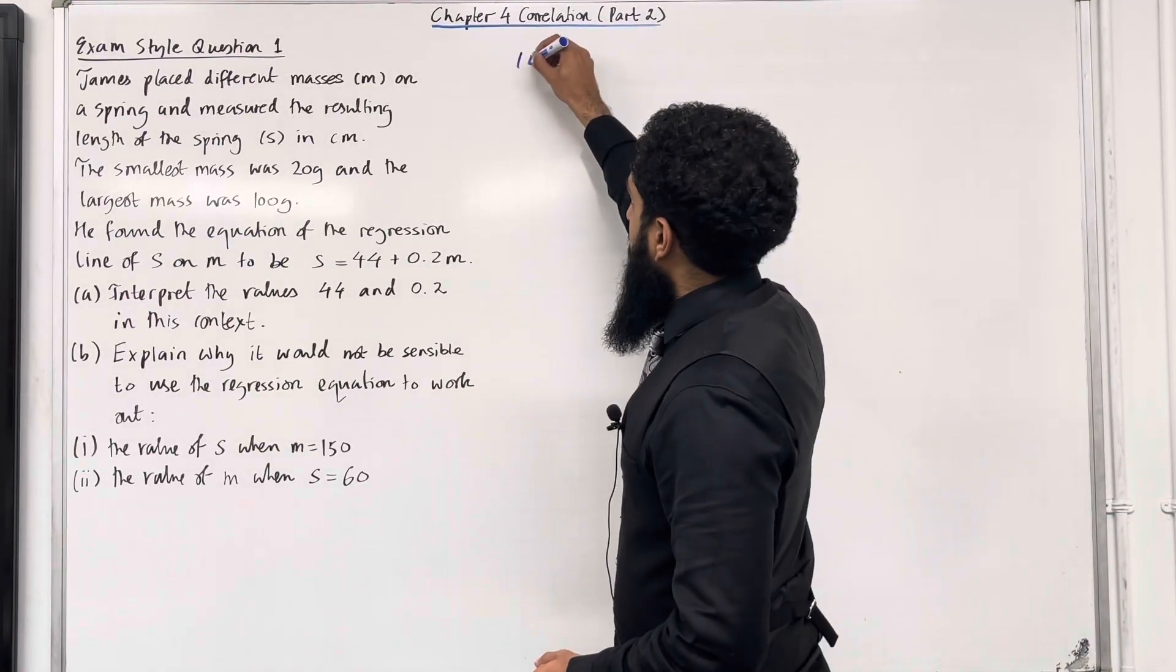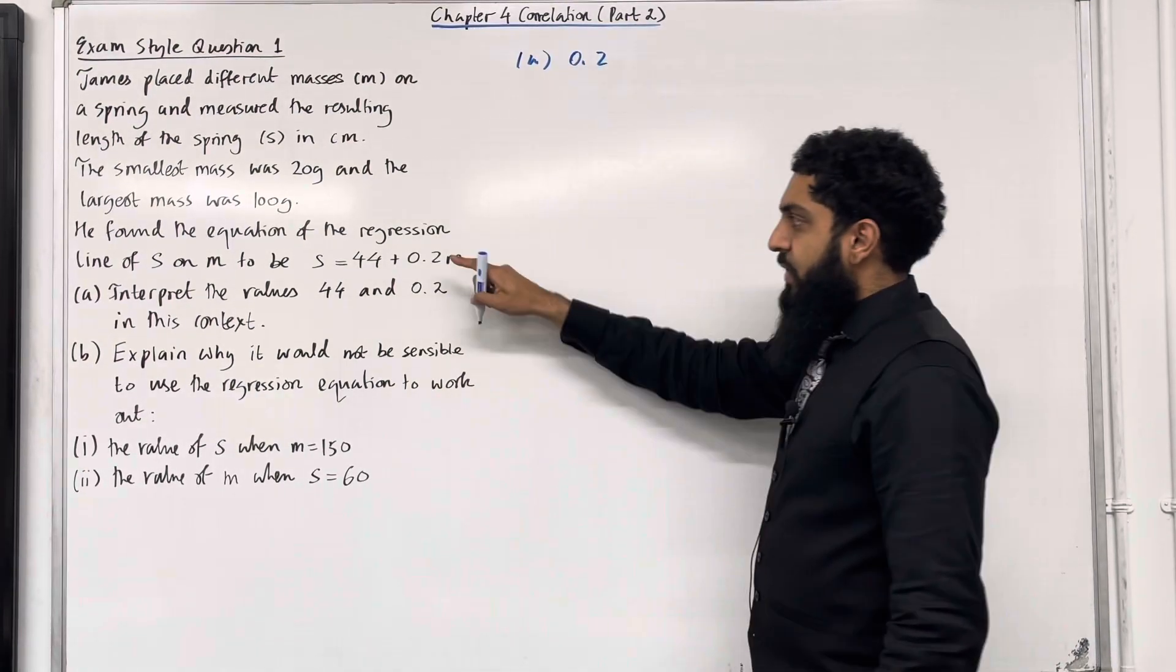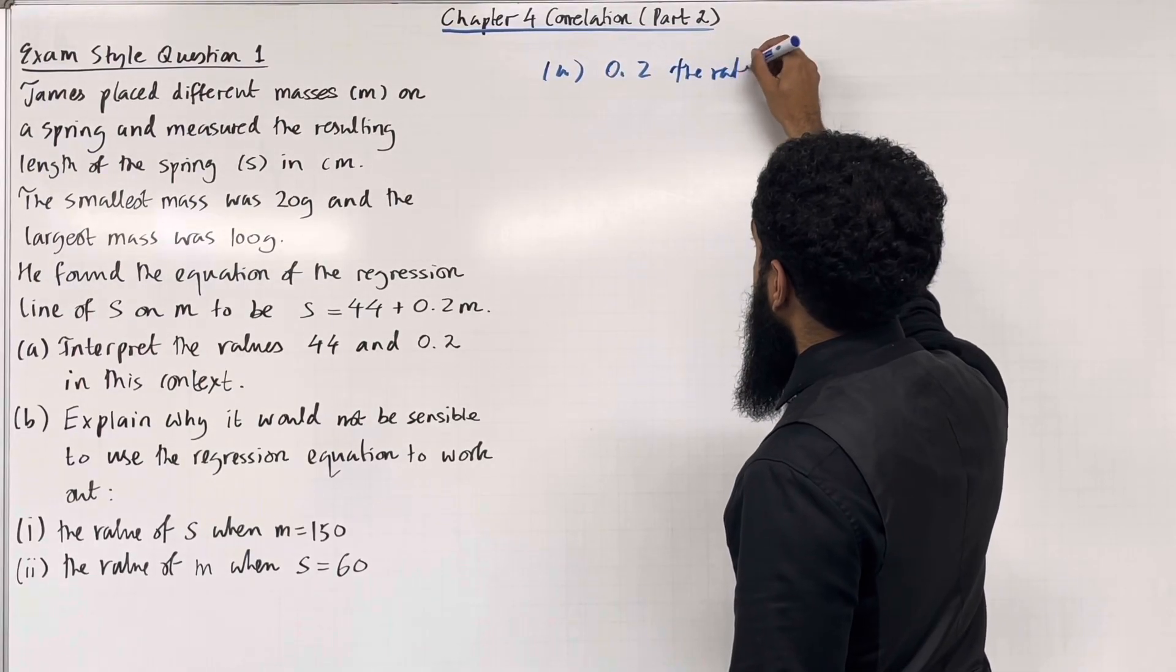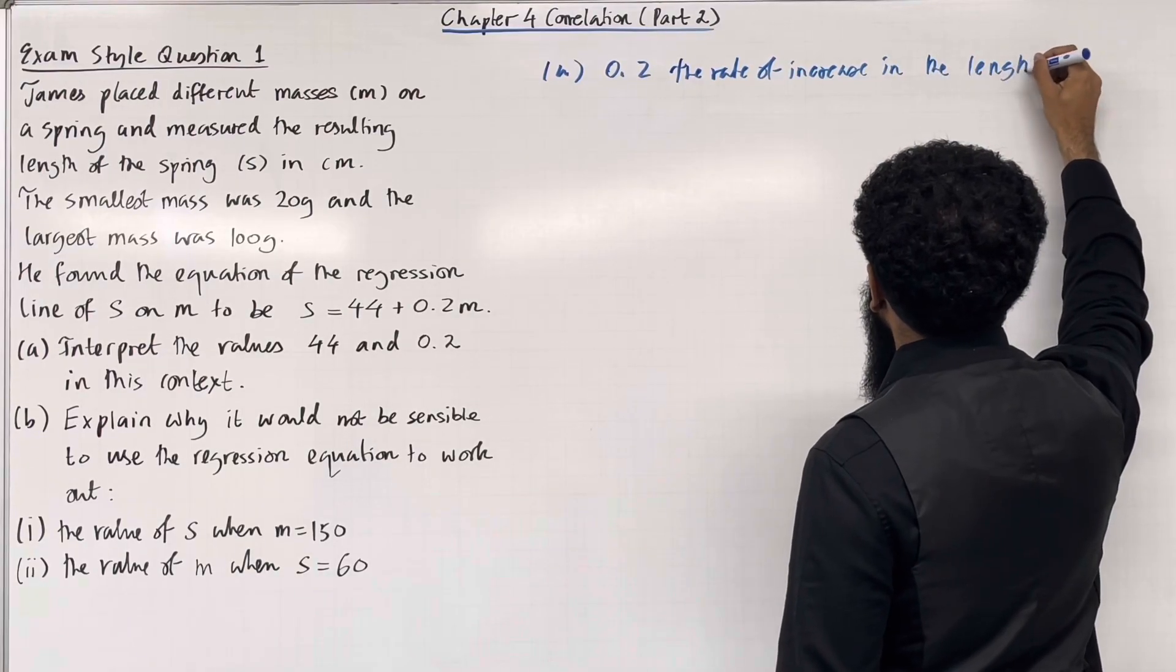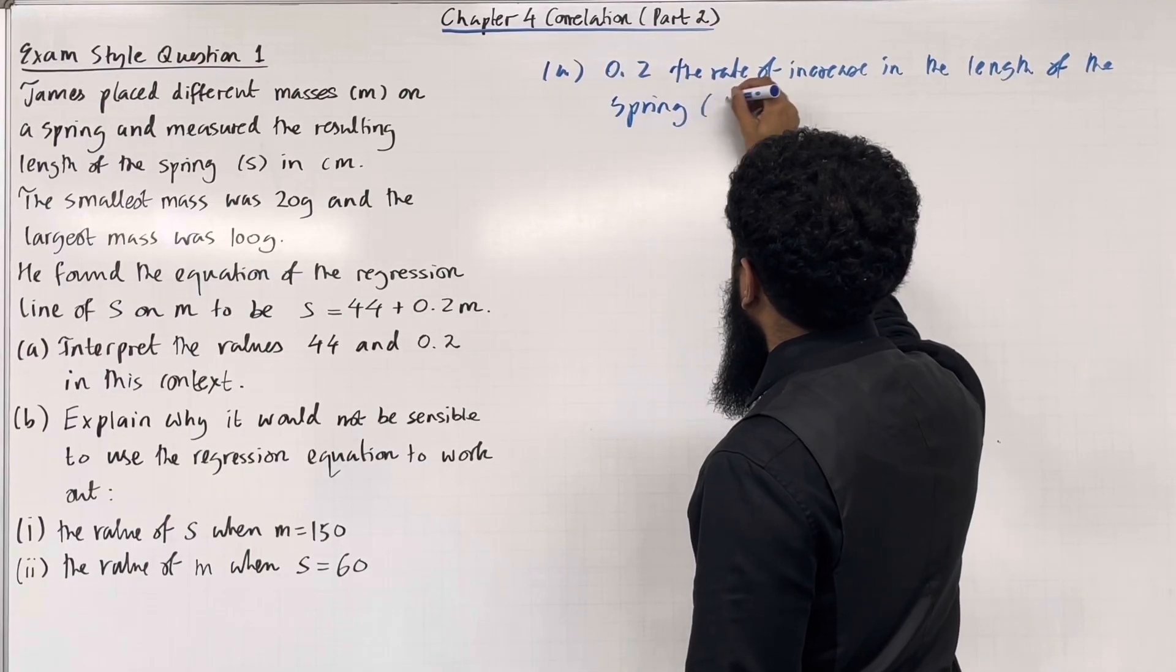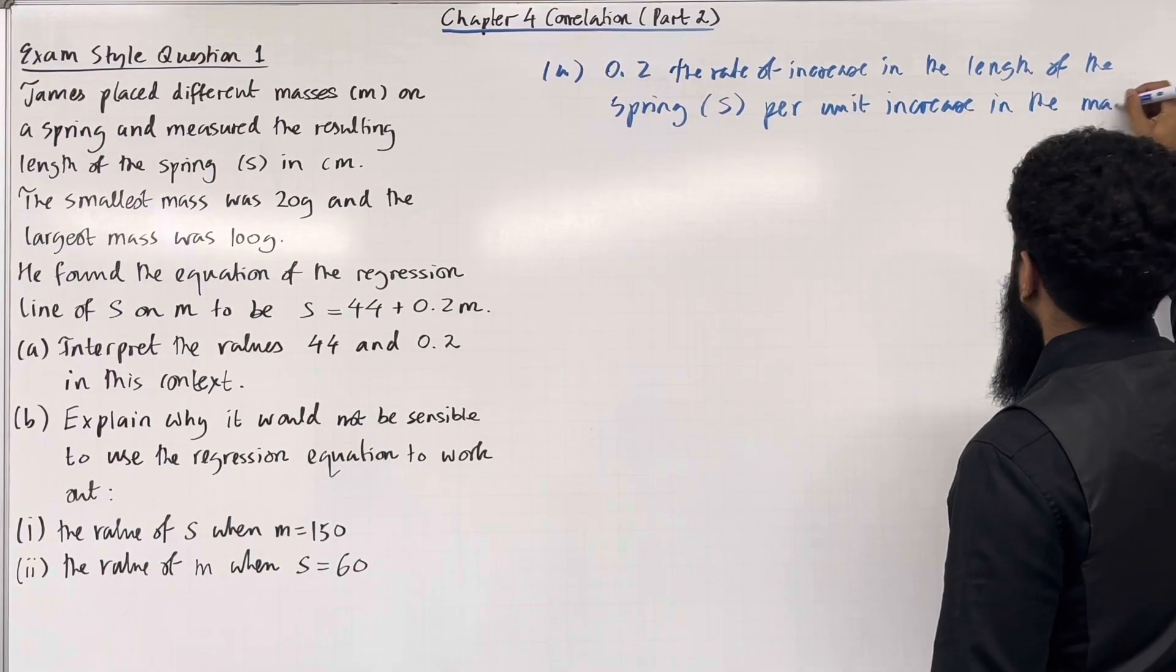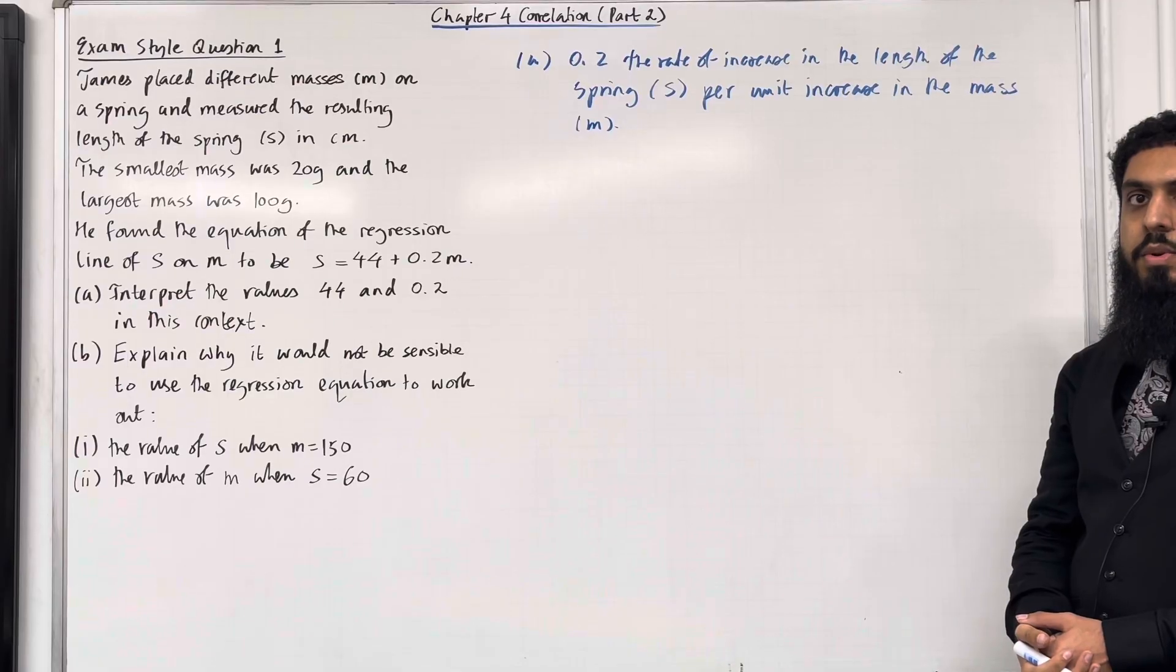Part A. Let's have a look at 0.2. So 0.2 is the gradient. The interpretation of the gradient for this context is as follows. 0.2 is the rate of increase in the length of the spring, s, per unit increase in the mass m. So that there is the interpretation of 0.2 in context.